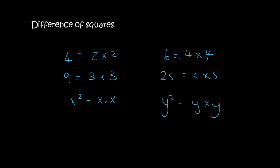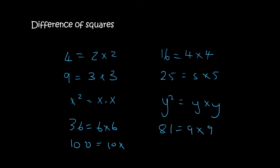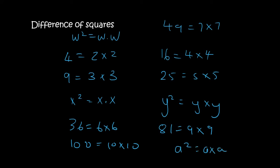You will see why I am doing this soon — I'm not crazy. 36 is the same as 6 times 6, 81 is 9 times 9, 100 is the same as 10 times 10, 49 is the same as 7 times 7, w squared is w times w, and a squared is a times a.